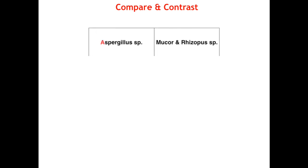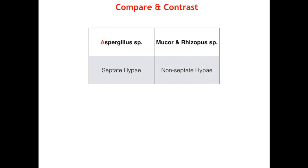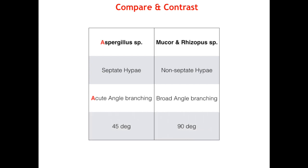Let's compare and contrast Aspergillus versus Mucor/Rhizopus because it's super important to keep their morphologies straight. Aspergillus has septated hyphae — M and N, Mucor has non-septated hyphae. Remember A for acute angle branching and A in Aspergillus, leaving Mucor and Rhizopus with broad or wide-angle branching. Likewise, 45 degrees comes before 90 degrees, just like A comes before M and N.